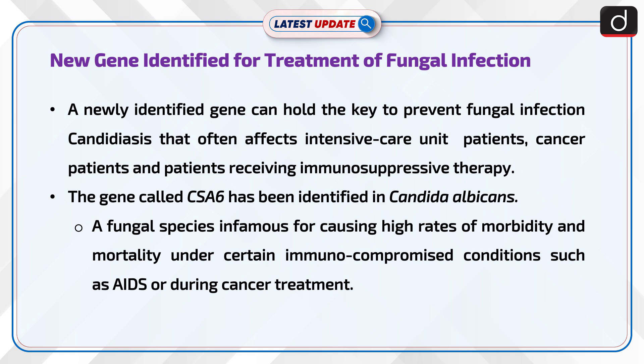A newly identified gene may hold the key to prevent fungal infection Candidiasis, which often affects intensive care unit patients, cancer patients, and patients receiving immunosuppressive therapy. The gene called CSA6 has been identified in Candida albicans, a fungal species infamous for causing high rates of morbidity and mortality under certain immunocompromised conditions such as AIDS or during cancer treatment.